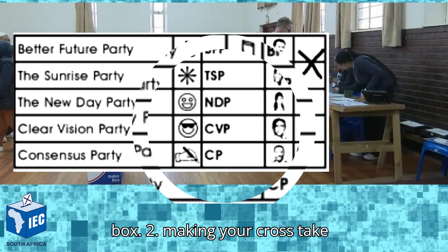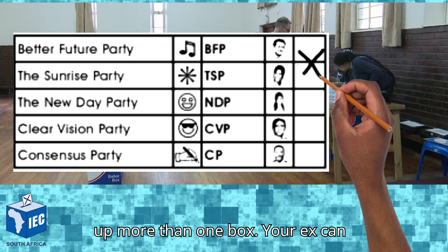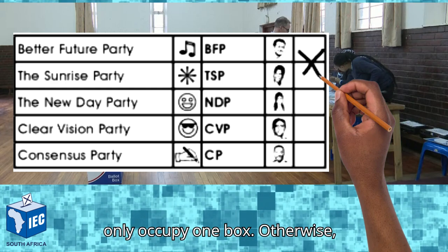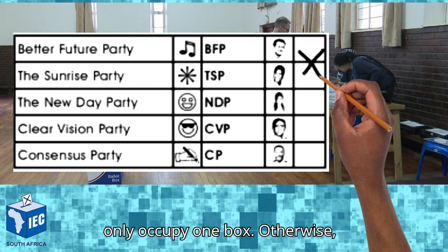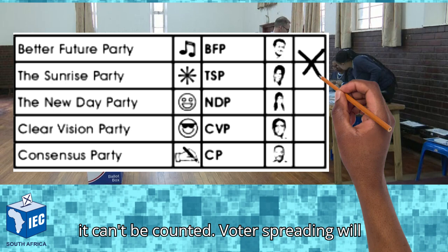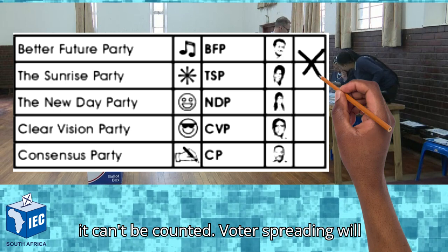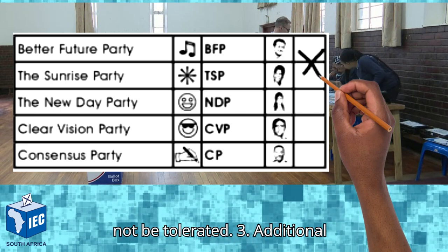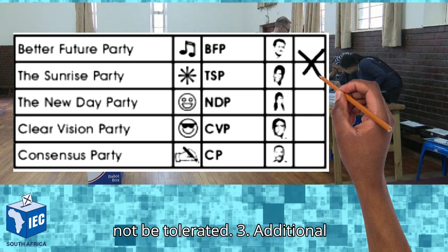2. Making your cross take up more than one box. Your X can only occupy one box, otherwise it can't be counted. Voter spreading will not be tolerated.